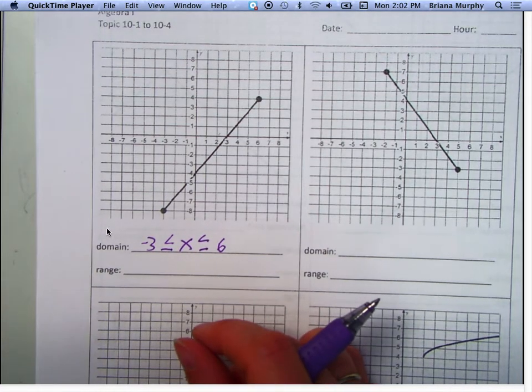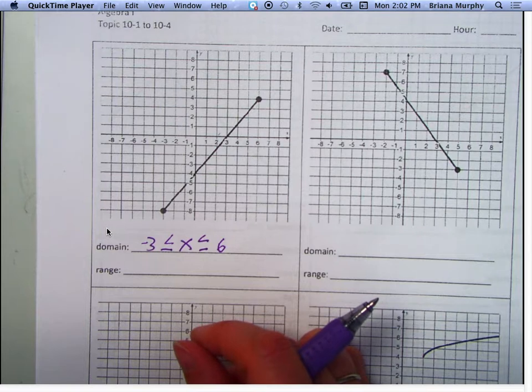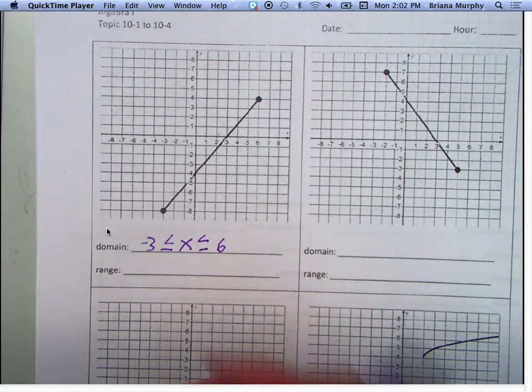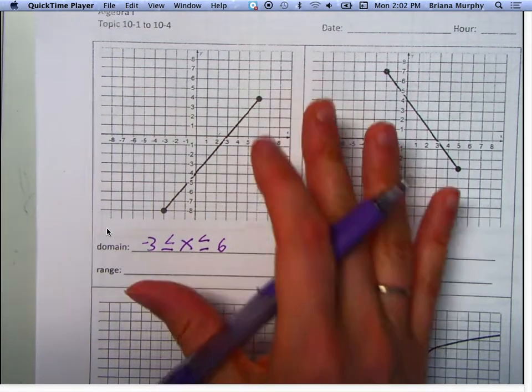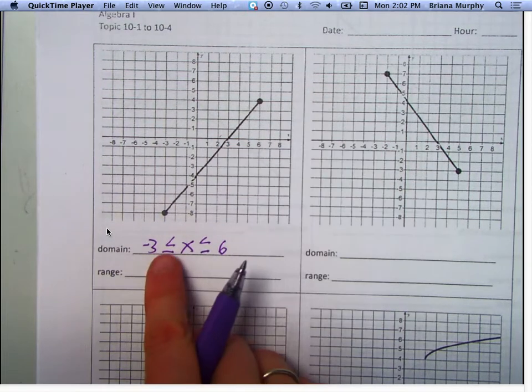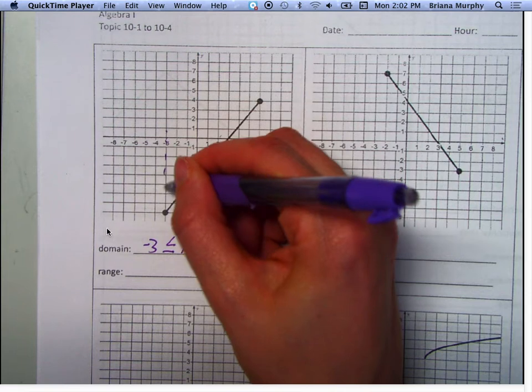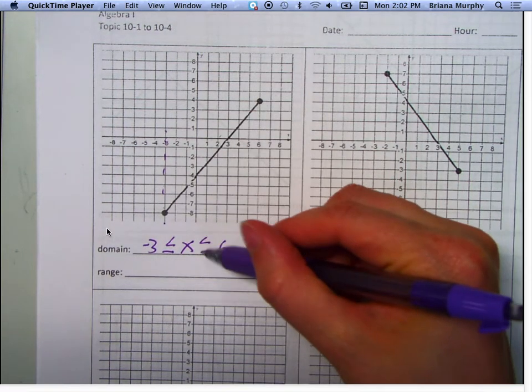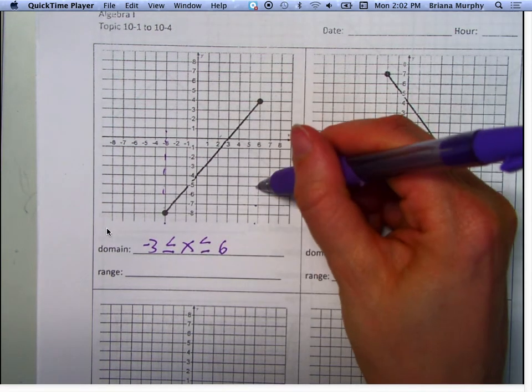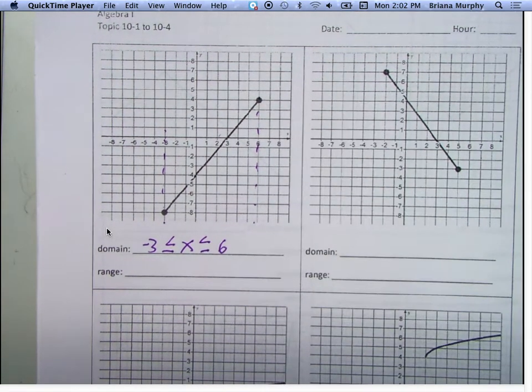So we put X in the middle, and then these numbers. So I really wish we would pay attention, guys, instead of playing on our phone or doing something else, because you're going to ask me this in two seconds. So X is greater than or equal to negative 3. See, negative 3 is right here. And X is less than or equal to 6. So it's in between those.